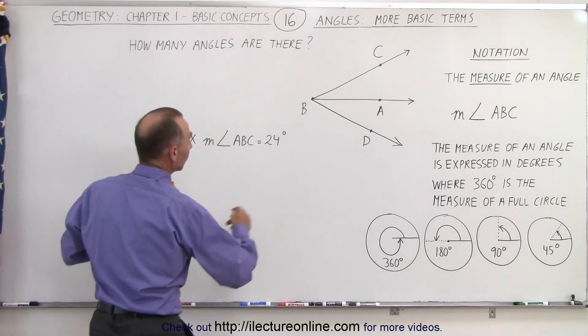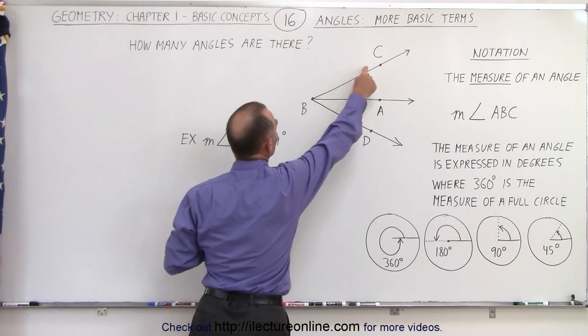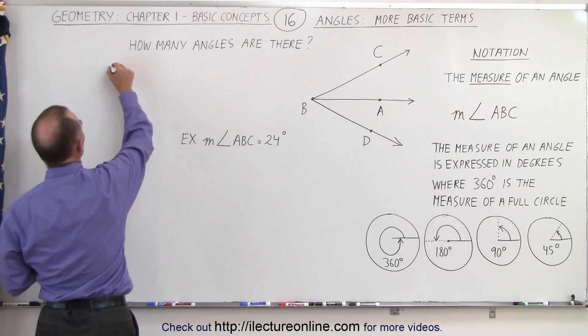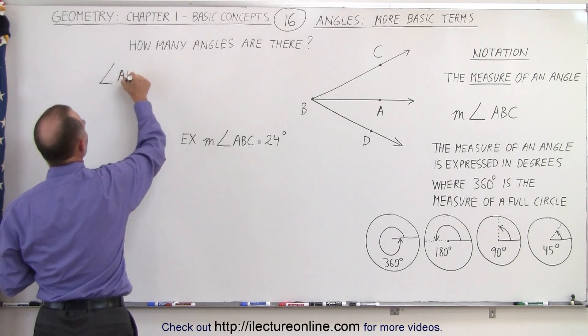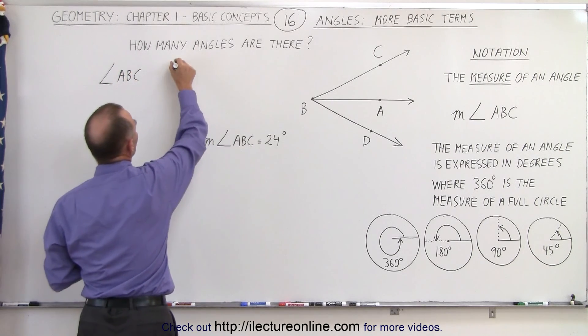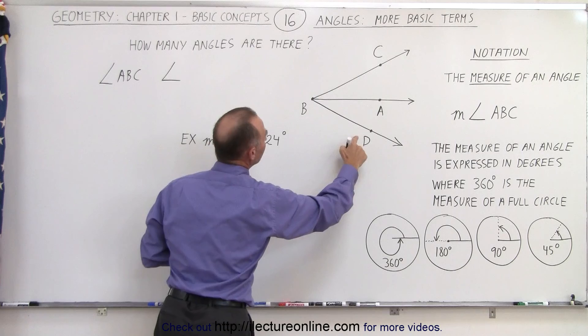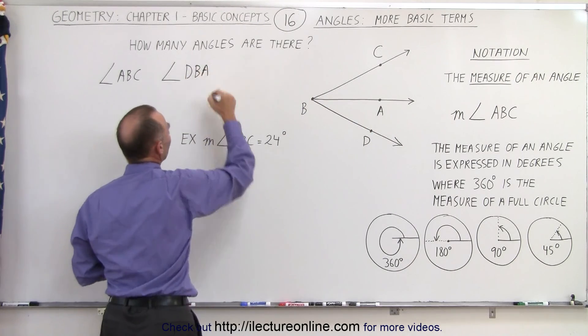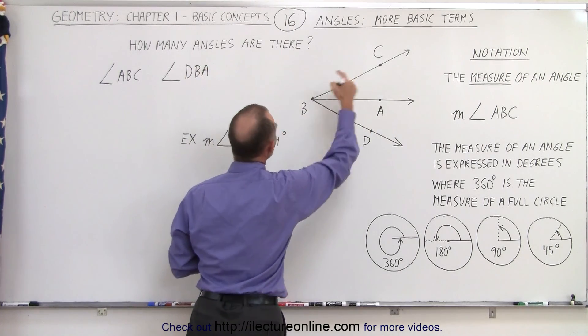We have an angle we can call from A to B to C, so we can write it like this. We have angle ABC, we have angle DBA, and we have a third angle, DBC.